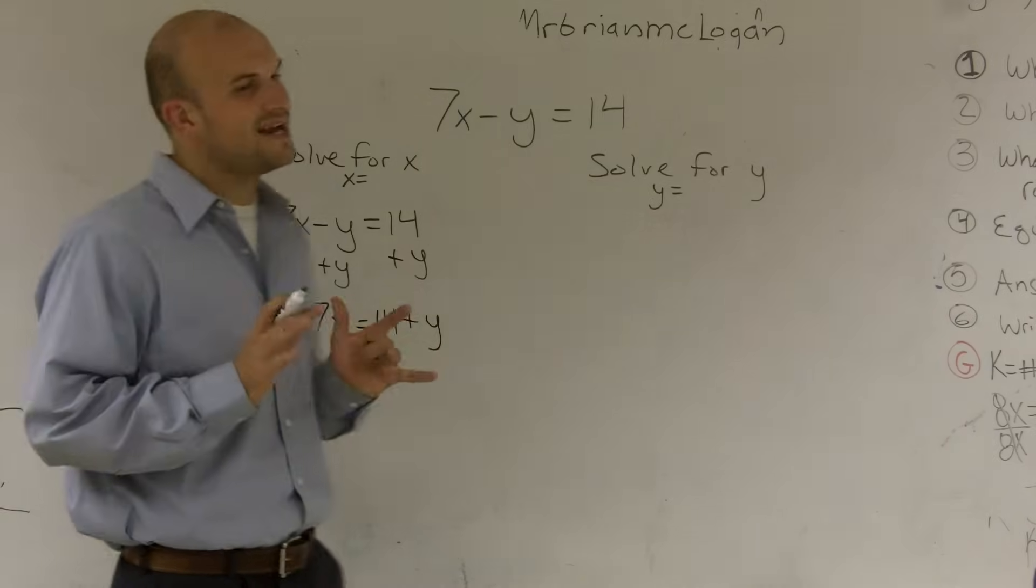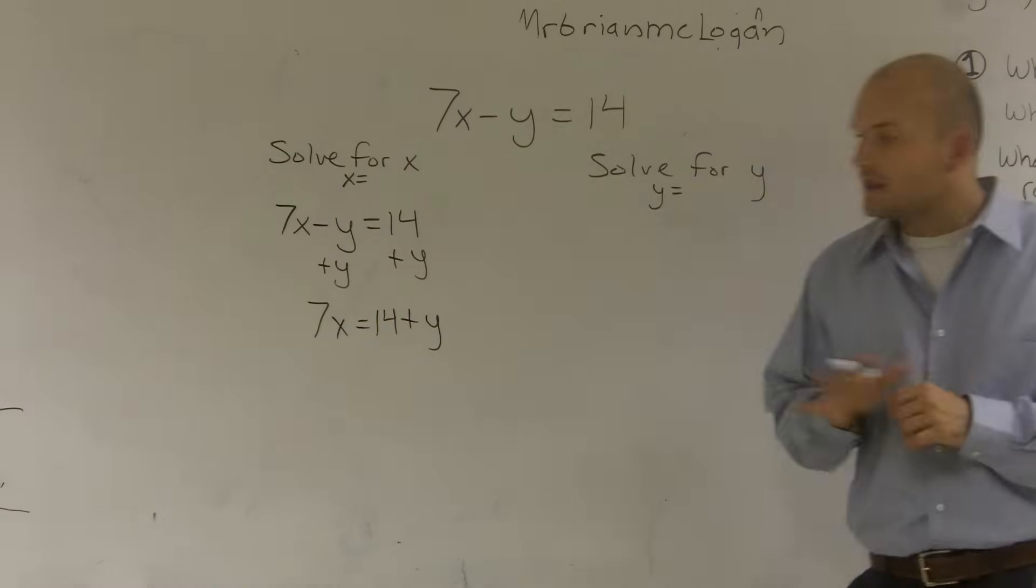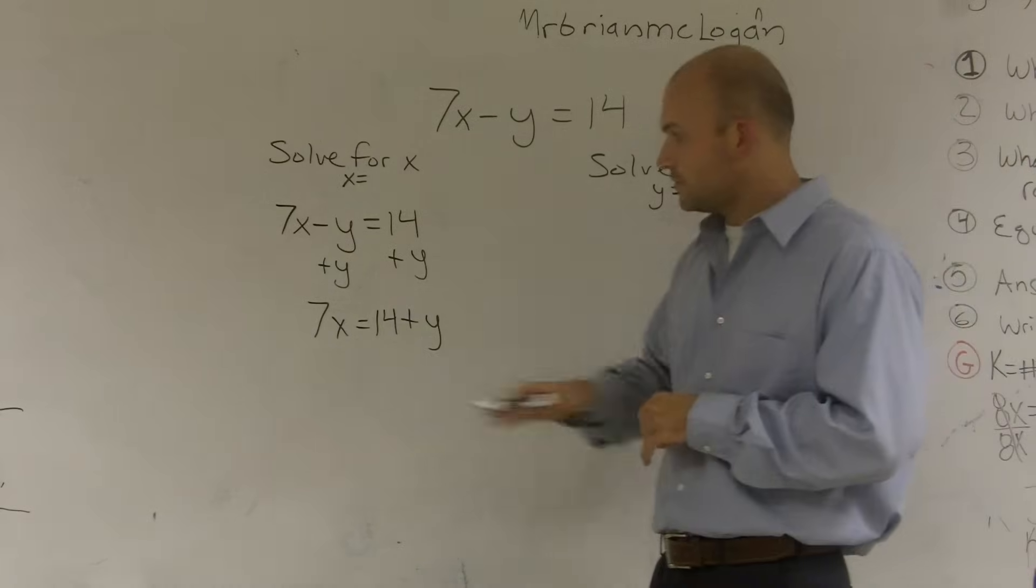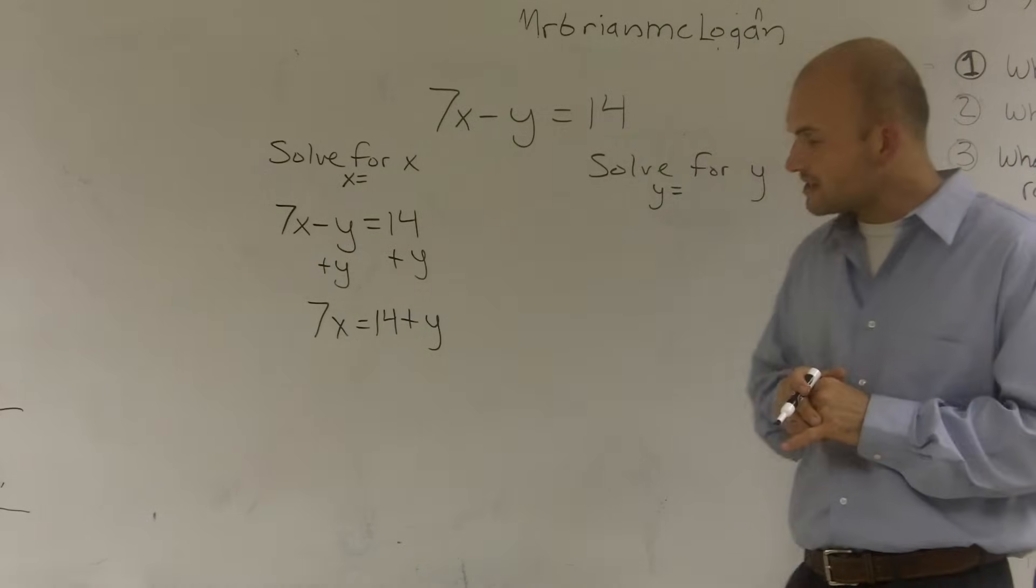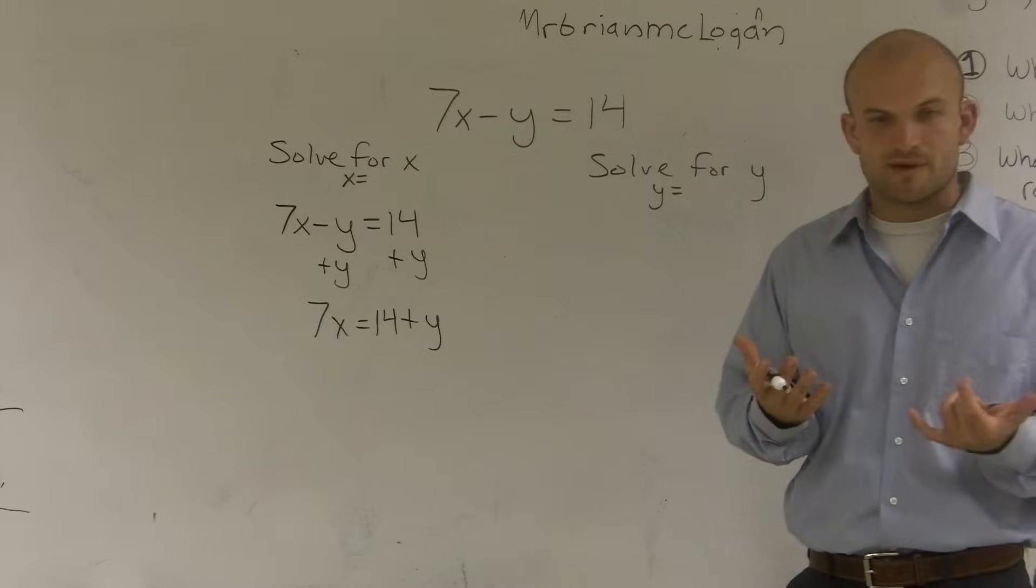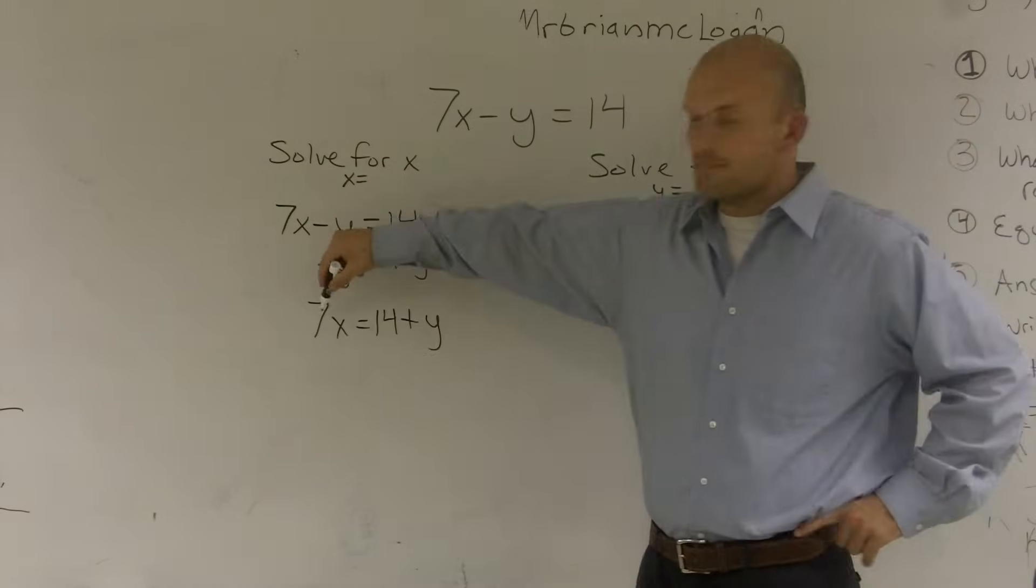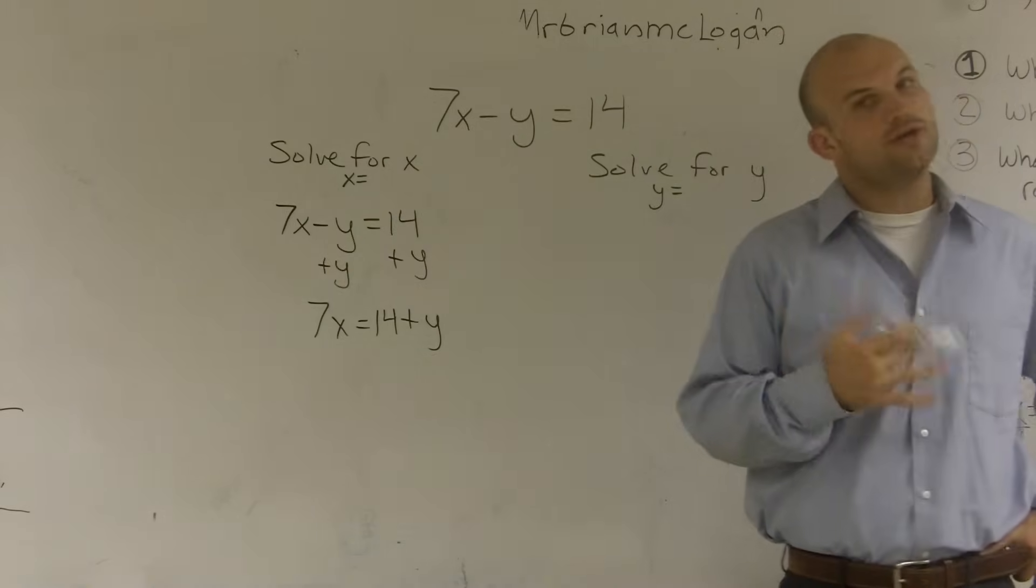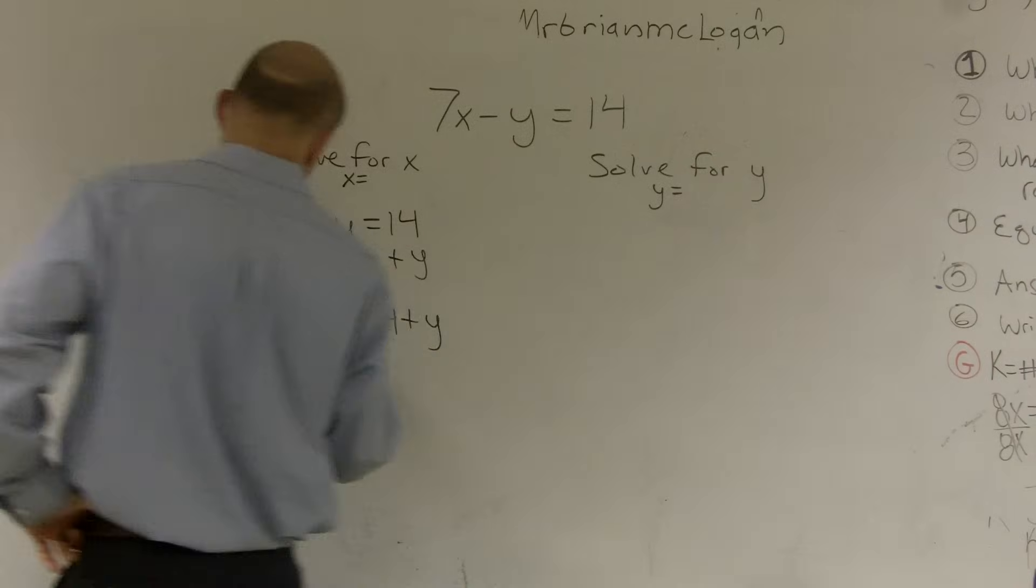And please remember, you cannot add a 14 plus a y. All right? Now the next thing I want to do is I want to undo now what's happening to my variable, which is, as you can see, I'm multiplying by 7. So to undo multiplication of 7 is to divide by 7.